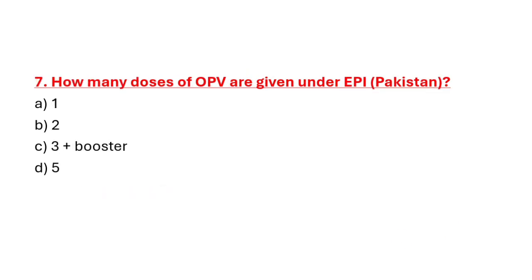Question 7: How many doses of OPV are given under EPI Pakistan schedule? Option A: 1. Option B: 2. Option C: 3 plus booster. Option D: 5. Correct answer is Option C: 3 plus booster dose.